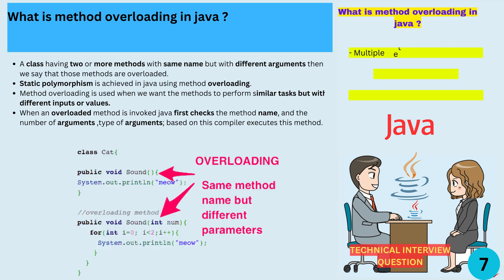In Java, when a class has two or more methods with the same name but with different arguments, we say that the methods are overloaded. Overloading allows us to achieve static polymorphism in Java. We use method overloading when we want methods to perform similar tasks but with different inputs or values. When an overloaded method is invoked, Java checks the method name and the number and type of arguments. Based on this information, the compiler knows which method to execute.